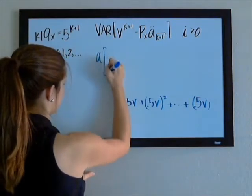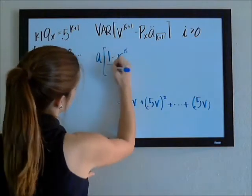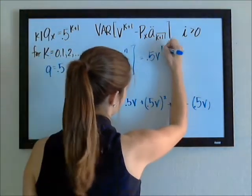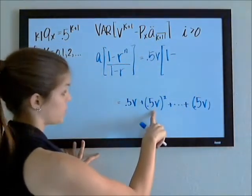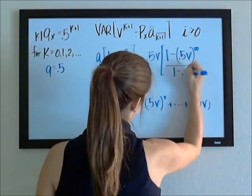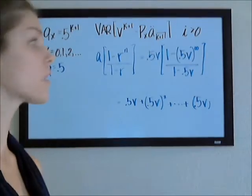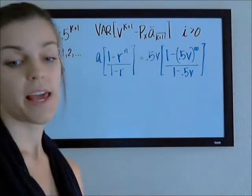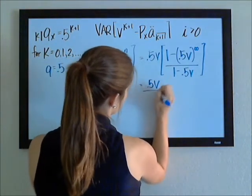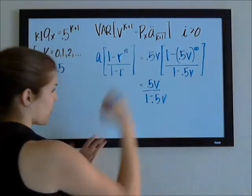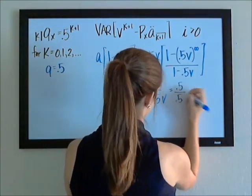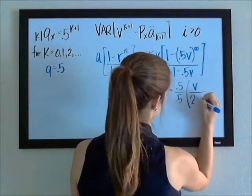I always use for summations, I always remember that it's the first term times 1 minus the ratio to the number of terms over 1 minus the ratio. Here that's our first term, 0.5 V times 1 minus our ratio, each time we're multiplying by the same thing, by 0.5 V to the infinity, over 1 minus our ratio, 0.5 V. And 0.5 V to the infinity is going to go to 0, so this simplifies to 0.5 V over 1 minus 0.5 V. I'm going to pull out a 0.5 just to make that look a little bit nicer, in the numerator and denominator, that'll be V over 2 minus V.